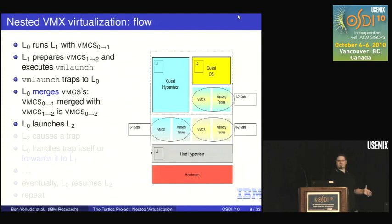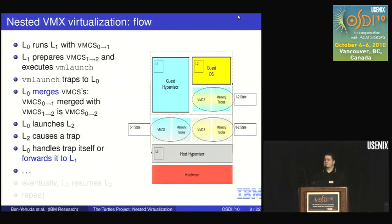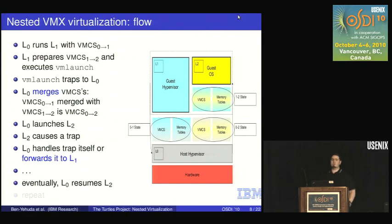Once L0 has prepared the VMCS and launches L2, L2 runs and, as virtual machines do, causes a trap. The trap goes to L0, which decides whether to handle it itself or, more often, pass it along to L1 because it's L1's virtual machine. Eventually L1 finishes handling it, resumes L2, and then L0 runs L2 again — this whole process repeats.